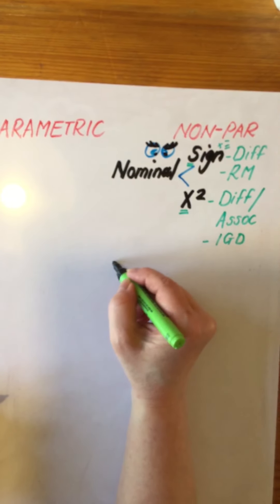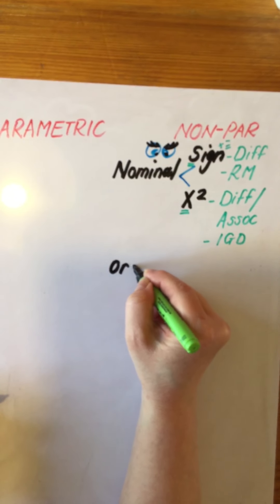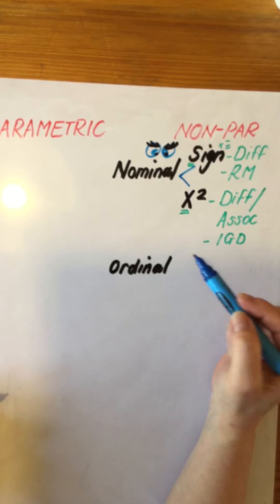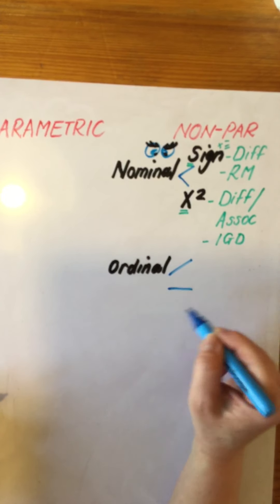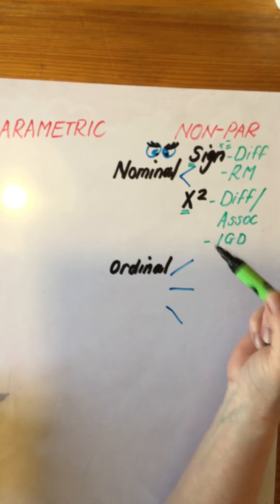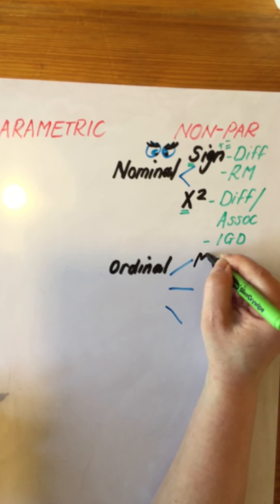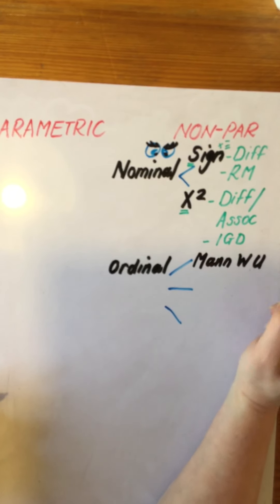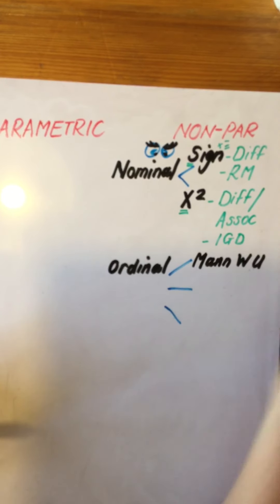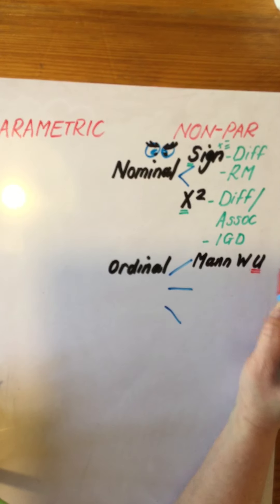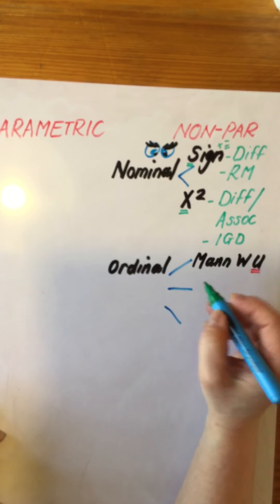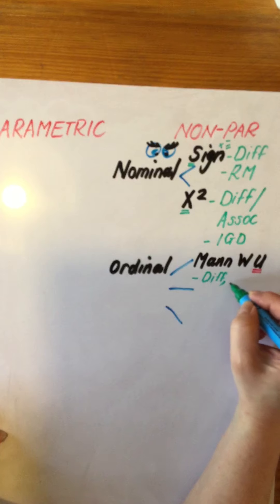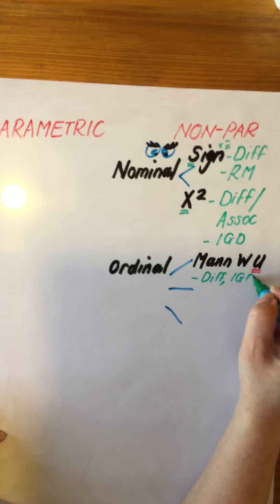As our data gets a bit more powerful, our tests change. If we have ordinal data, we have a number of tests we can use. The first is that old chestnut, the Mann-Whitney U — and remember, U is the value we're looking for. It's a test of difference where data is ordinal but an independent groups design is used.